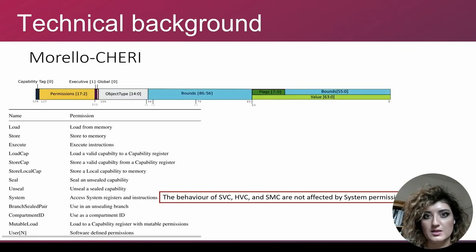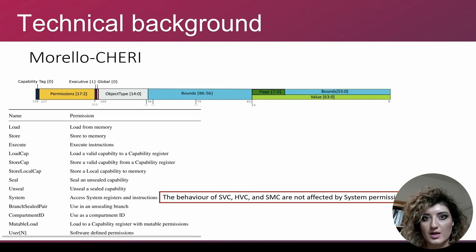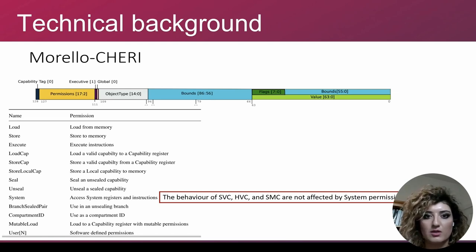ARM extended its architecture with CHERI, and all of the instructions — for example load, store, execute — have a capability-based version like load capability or store capability, with additional capability operations such as sealing, which makes a capability immutable. All these extensions are also added in every privileged layer in ARM. For example, in the secure modes you can also have compartmentalization — the TrustZone architecture that previously had a one-way trust between the secure mode and normal mode now allows a kind of mutual distrust between regions. So there are a lot of possibilities for better privilege separation on systems now.